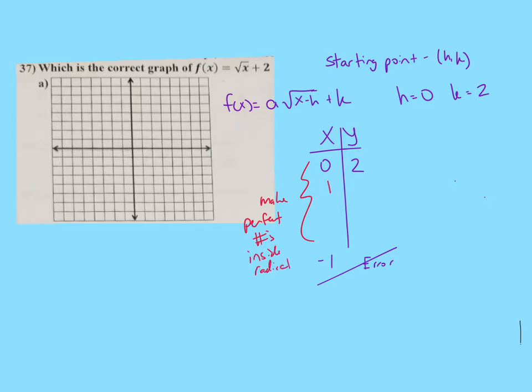Now, my recommendation for you with this is that when you go to fill out your x, y chart, that all of these should make perfect squares inside the radical. So I want to make perfect numbers inside the radical, which is really easy in this one because there's nothing going on with h.